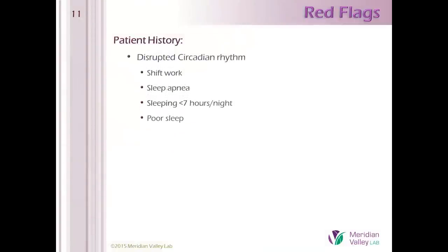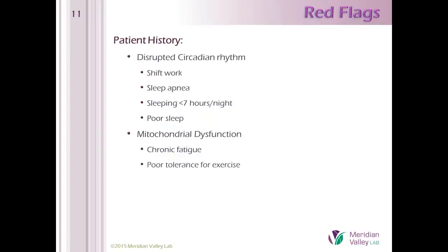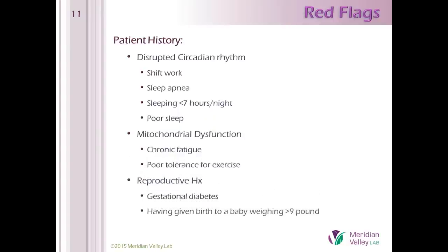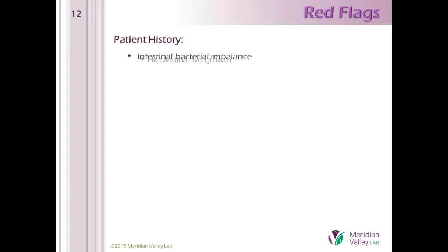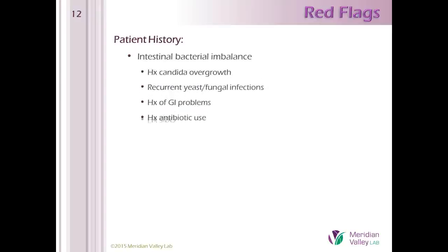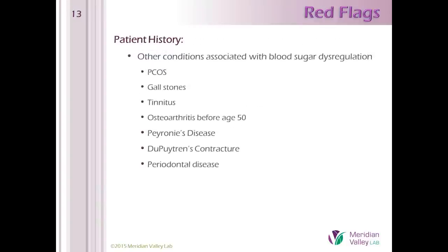Any sign of circadian rhythm disruption is a reason to evaluate further for insulin resistance. Dr. Lee will talk more about dealing with sleep problems in Part 3 in two weeks. Chronic fatigue and poor exercise intolerance may be signs of poor mitochondrial function. In women, a history of gestational diabetes or having had a big baby should heighten your surveillance. Any history suggestive of an imbalance in intestinal flora would also be a reason to check your patient's insulin response.